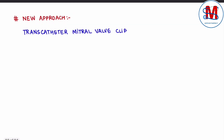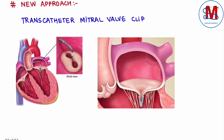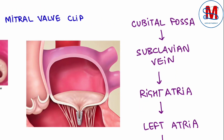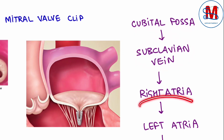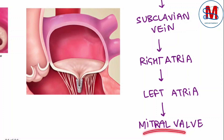Usi ke saath, ek nayi approach hai jo less invasive procedure hai — woh hai transcatheter mitral valve clip. Jis mein mitral valve orifice ko close karne ke liye, taaki blood leak na kar paye left ventricle se left atria ki taraf, hum yahan clip insert kar dete hain. Hum cubital fossa se insert karte hain, jo subclavian vein se direct right atria, left atria, aur phir mitral valve tak jata hai.